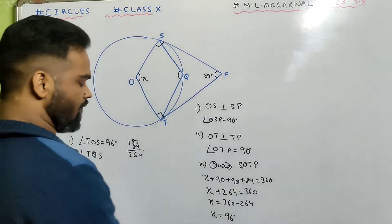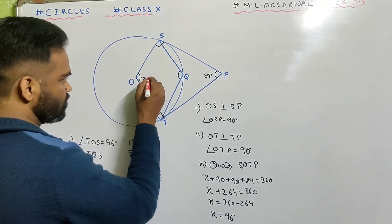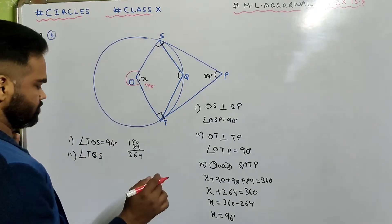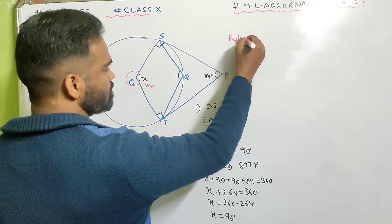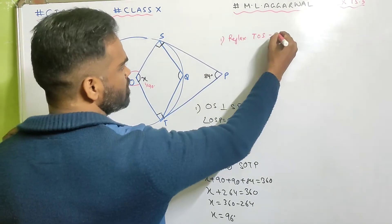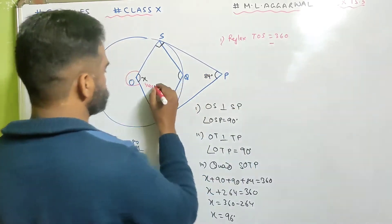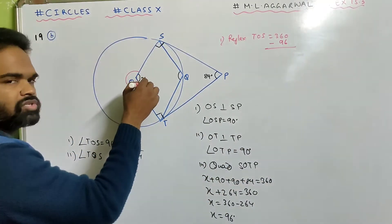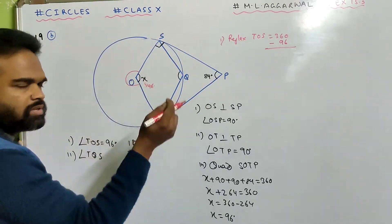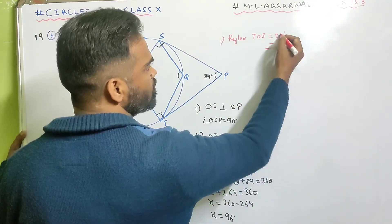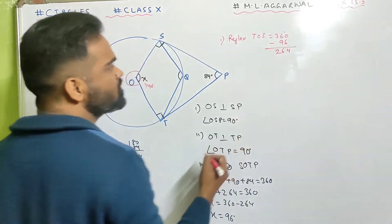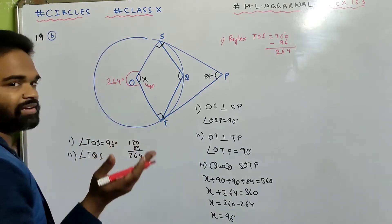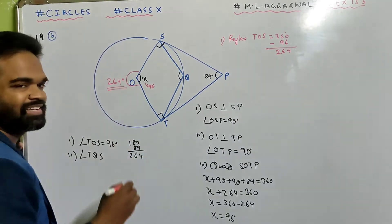Now find angle TQS. Reflex angle TOS will be 360 minus 96, which equals 264 degrees. The entire angle is 360, so if this angle is 96, the reflex angle will be 264 degrees.